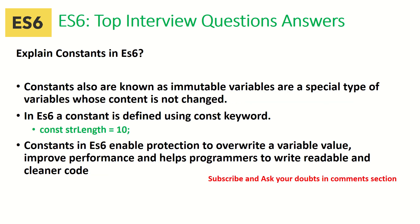The next question is: explain constants in ES6. Constants are also known as immutable variables — a special type of variable whose content cannot be changed. Once we declare a variable using the const keyword, you cannot change the value. If you want a changeable value, you will need to use the let keyword. So those are the two different types of variable declarations: const and let.